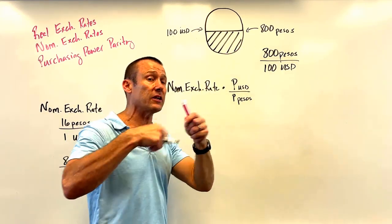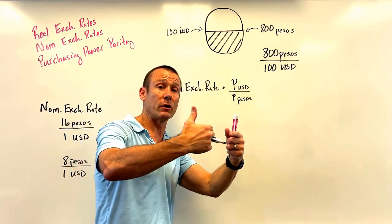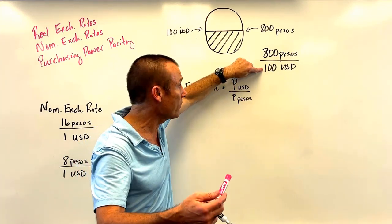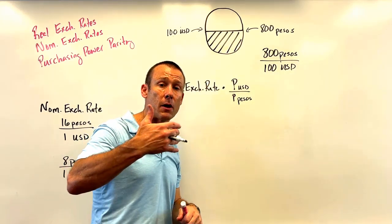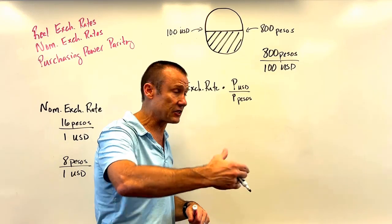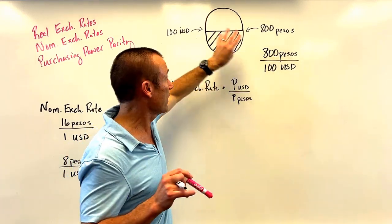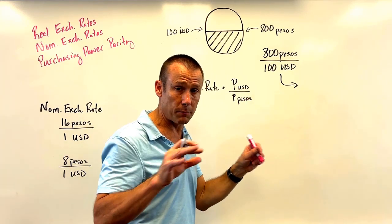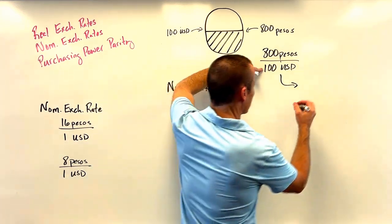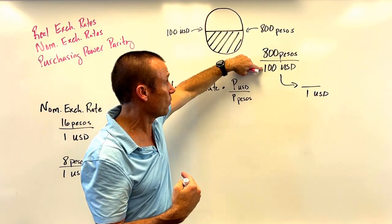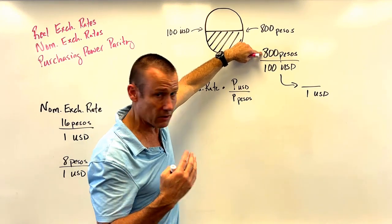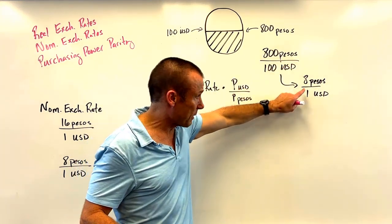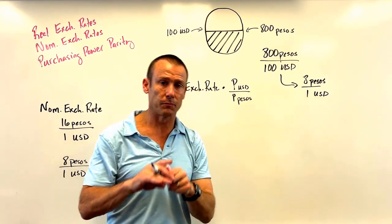This exchange rate isn't a rate at which we're actually exchanging currencies — it represents buying power equivalents. One hundred USD in the United States has the buying power equivalent of 800 pesos in Mexico. To express it in terms of one USD, we divide both by 100: that gives us 8 pesos per USD. That's our purchasing power parity exchange rate.